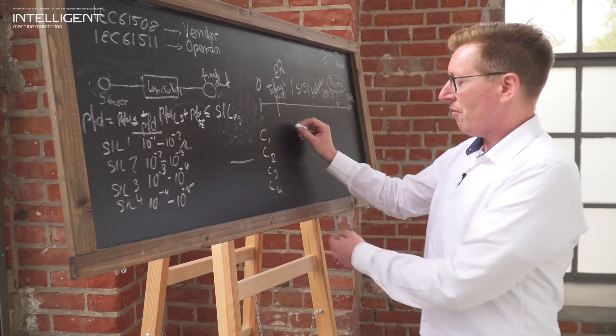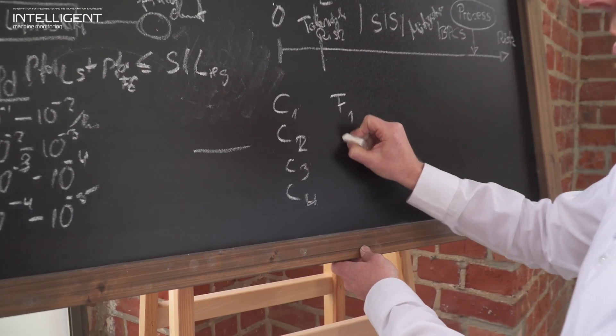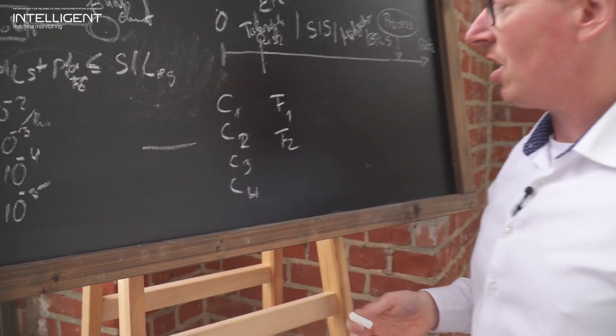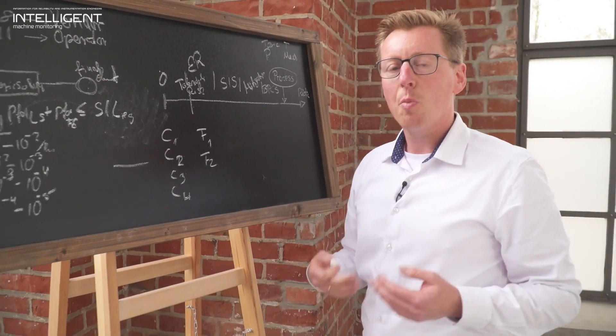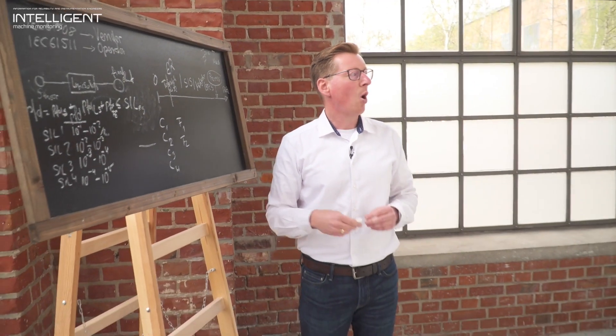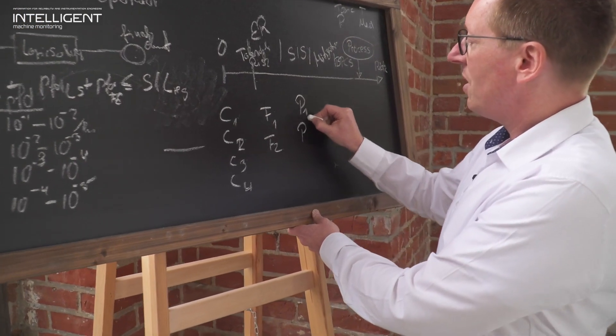Then a second factor in this is F, like frequency of exposure, frequency one or two. That means how frequent is any person or the operator nearby the machine. Applications we deal with on a daily basis, we have operators, personnel walking across the machine. So the exposure is very frequent.